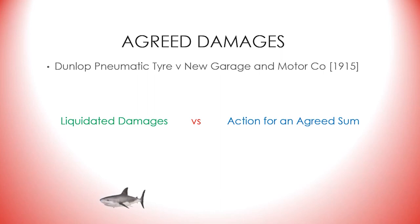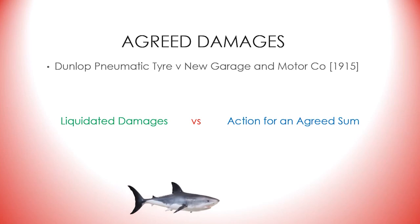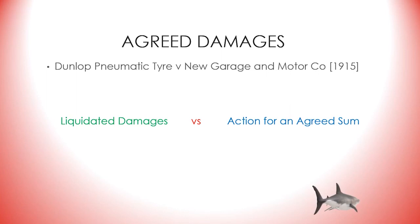The liquidated damages clause is supposed to be a genuine pre-estimate of damages. Liquidated or agreed damages are not to be confused with an action for an agreed sum — this denotes the situation where the claimant is asking for the contract price after having performed his obligation under the contract. The benefit of this action is that it is not subject to the limiting doctrines we will discuss next.